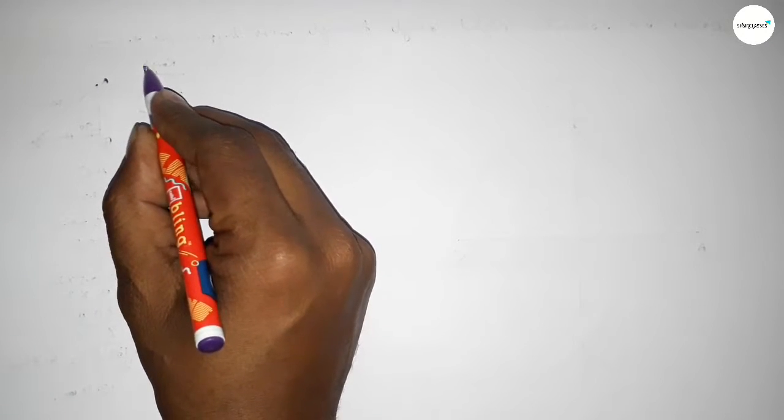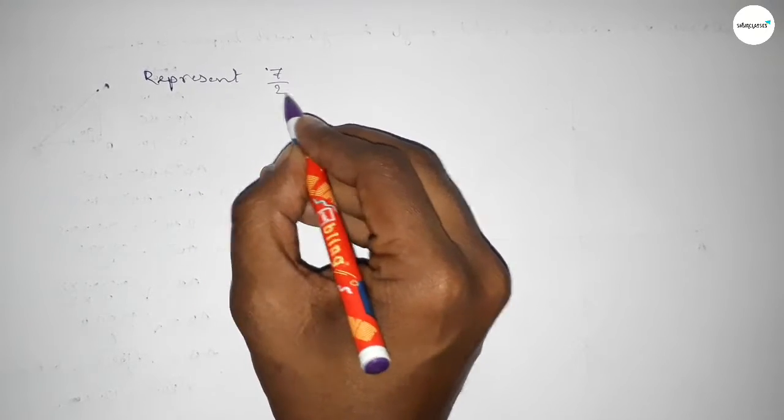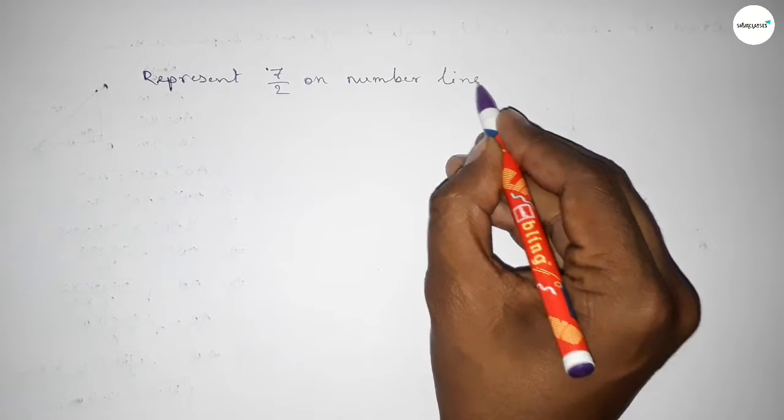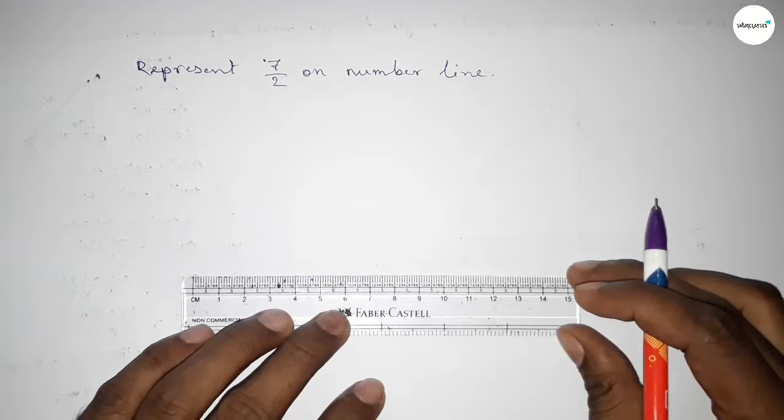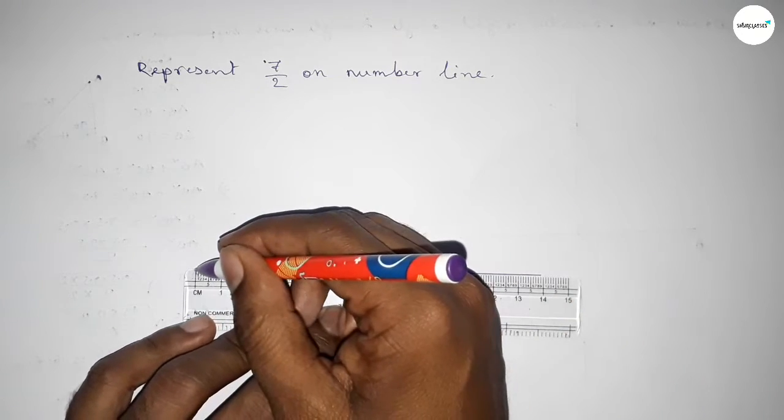Hi everyone, welcome to SI Share Classes. Today in this video we have to represent 7 over 2 on number line. So let's start the video. First of all, we have to draw here the number line first.